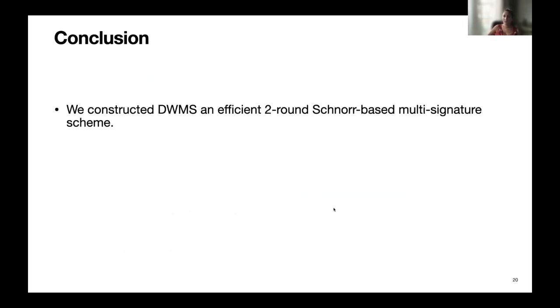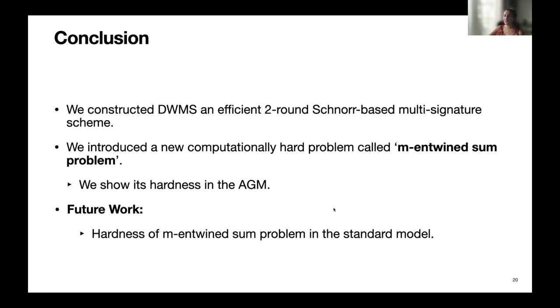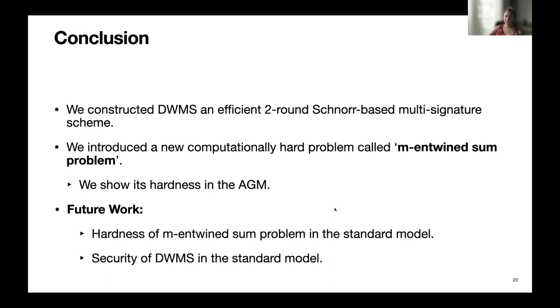To conclude, we constructed DWMS, an efficient two-round Schnorr-based multi-signature scheme. We introduced a new computational hard problem, the M-Entwine-Sum problem, which we believe is useful for preventing K-sum attacks, and we showed its hardness in the algebraic group model. As future work, it would be interesting to see whether the M-Entwine-Sum problem is hard in the standard model, and to obtain a security proof of DWMS in the standard model as well. Thank you for listening.